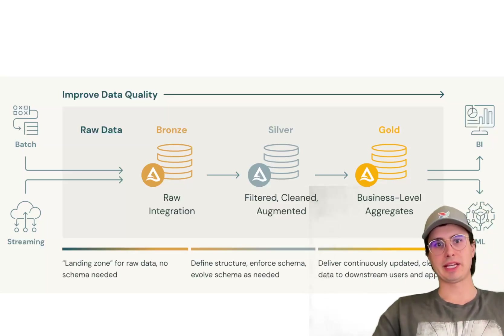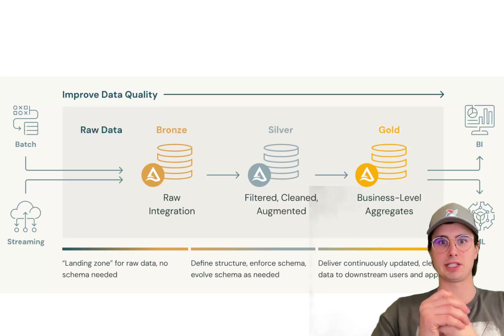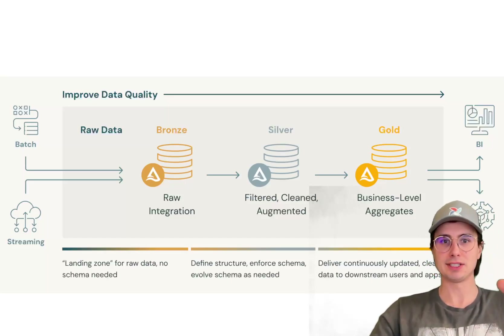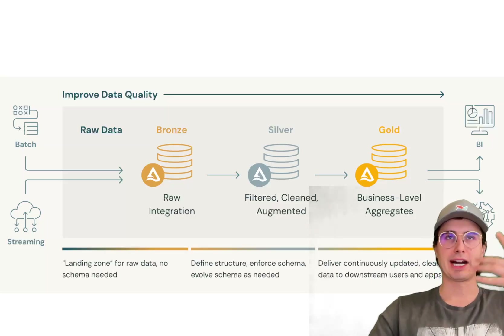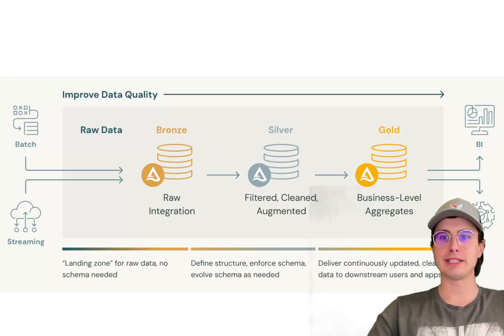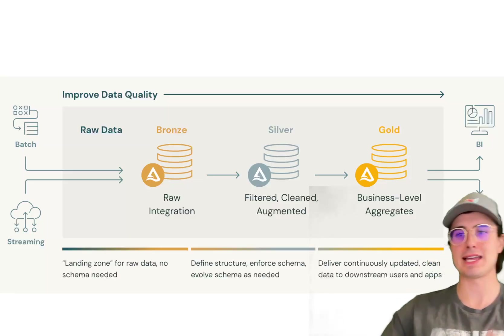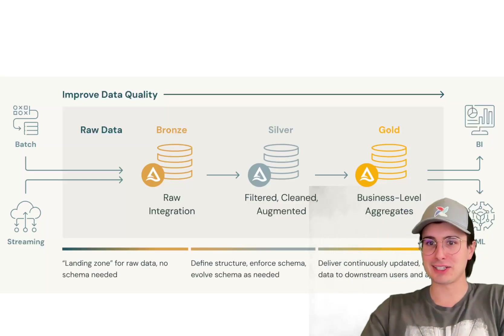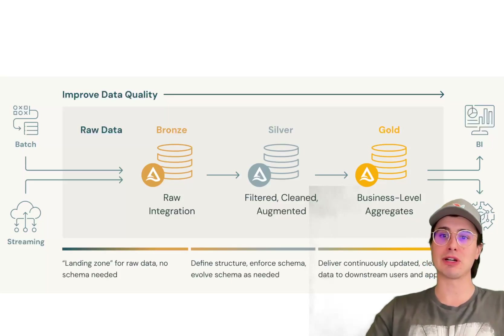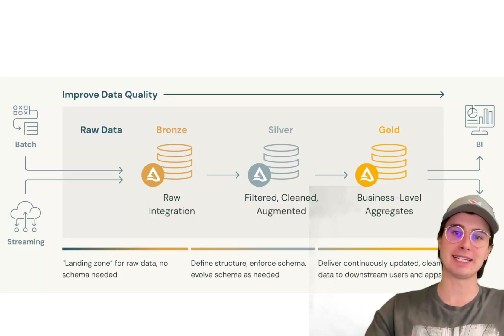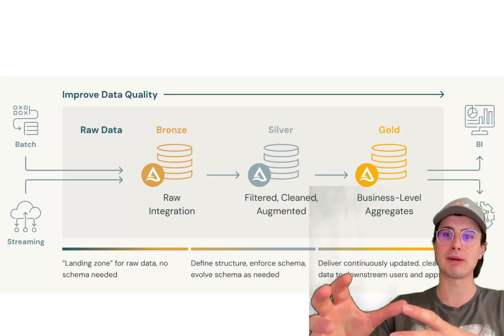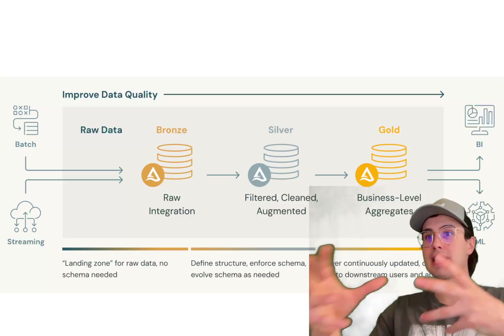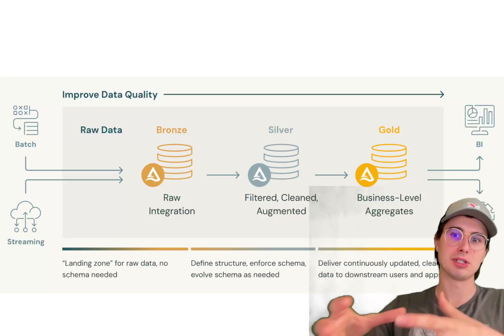In terms of the basics, with Medallion architecture you have those three distinct layers. It's really a process in which you're defining what are the different steps that my data needs to go through before it's ready for BI and ML activities. As everyone that's worked with data knows, most of the work to getting your data ready for BI or a dashboard is actually cleaning it — taking that raw data and turning it into a format that can be read and consumed by downstream users and applications.